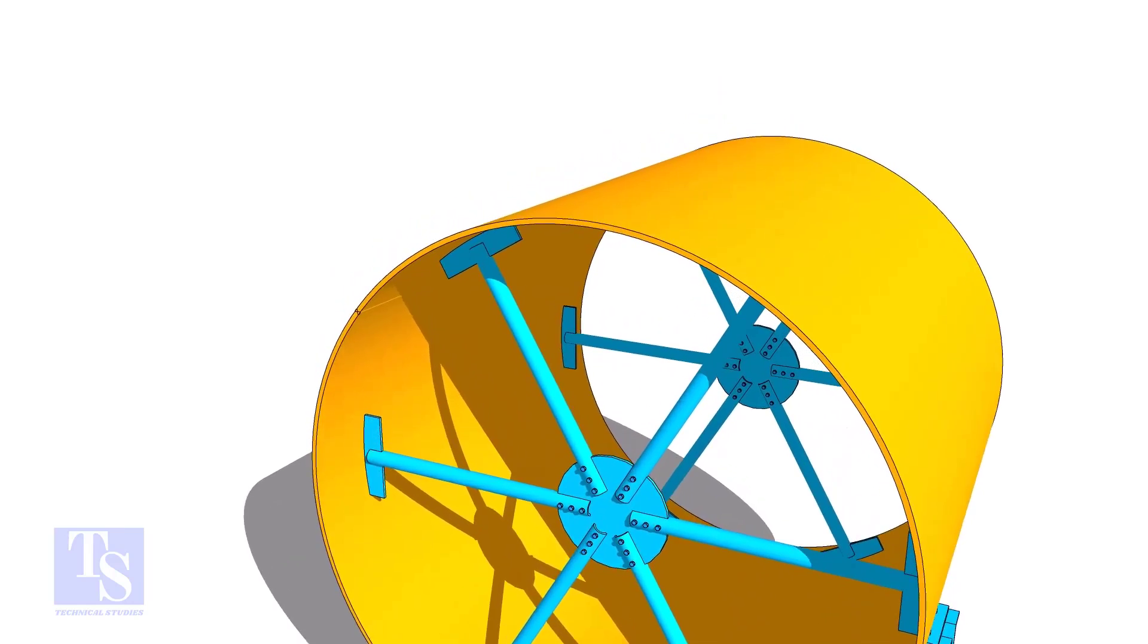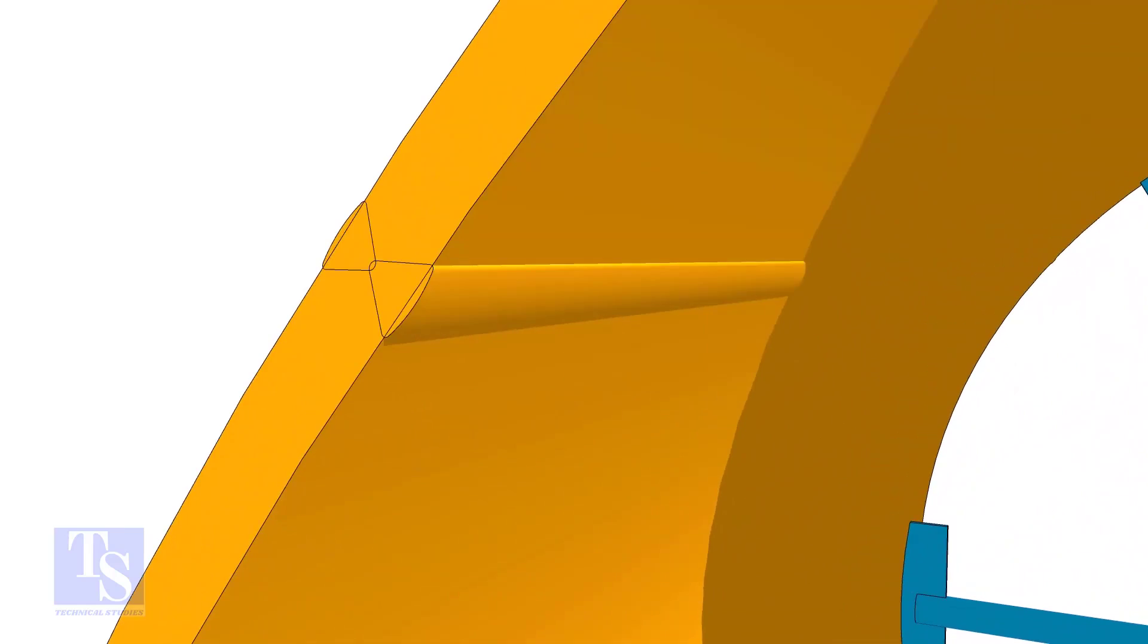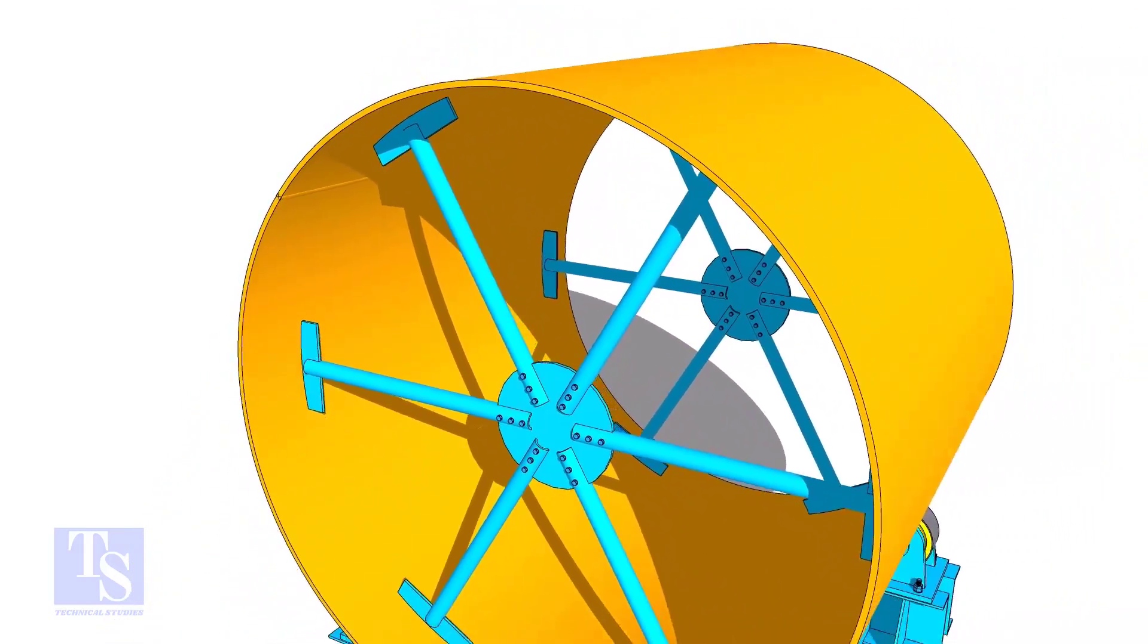After the shell plate rolling, install the spider support and complete the long seam welding. The spider support will help to maintain the circularity of the shell.